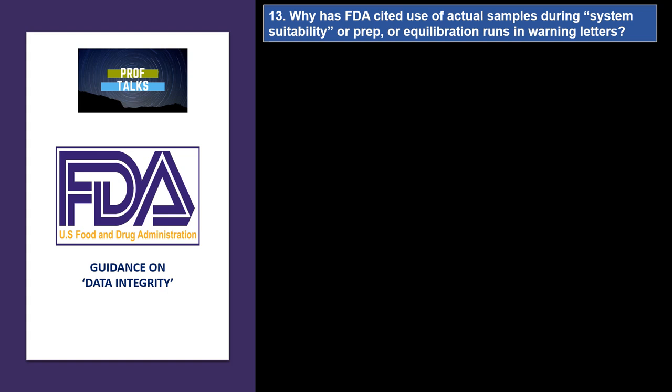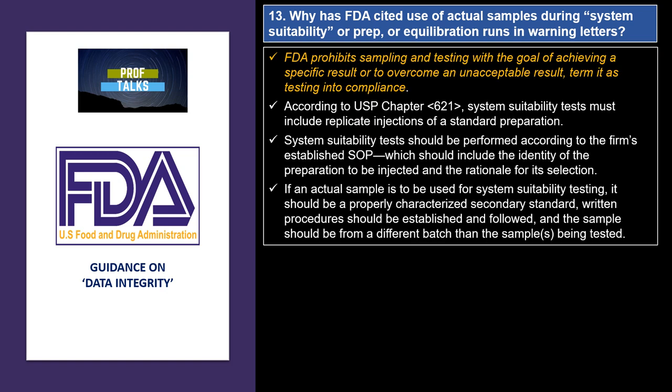Why has FDA cited the use of actual samples during system suitability or equilibration runs in warning letters? FDA terms this as testing into compliance and prohibits sampling and testing with the goal of achieving a specific result. According to USP Chapter 621, system suitability tests must be a replicate injection of a standard preparation. The standard preparation should be defined in the SOP and the rationale for its selection documented. If an actual sample is used for system suitability, it should be a properly characterized secondary standard, a procedure should be available for it, and it should be from a different batch than the one being tested.